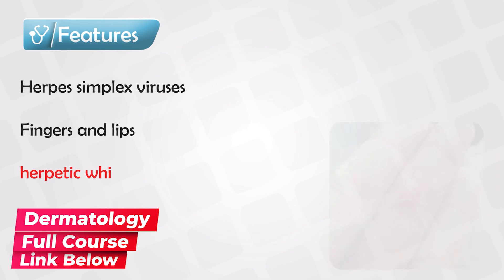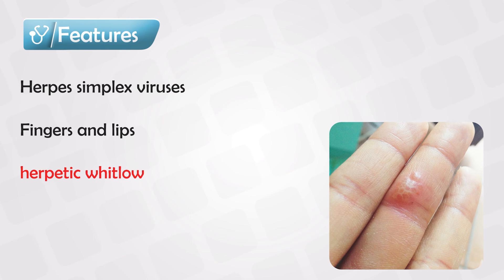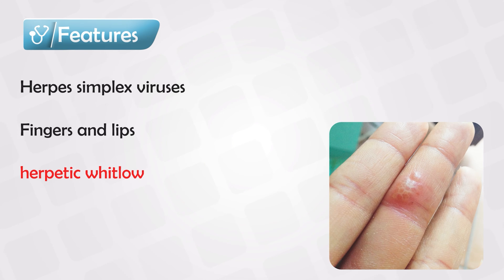The striking feature that you need to know is the herpetic whitlow, which is found in the fingers. This is highly characteristic of herpes and you need to know how it looks.